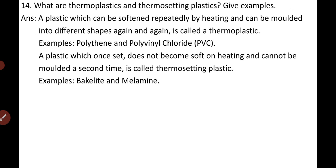Question twelve: What are thermoplastics and thermosetting plastics? Thermoplastics are plastics which can be softened repeatedly by heating and molded into different shapes again and again. They are flexible and can be bent easily without breaking. Examples: polythene and polyvinyl chloride (PVC). Thermosetting plastics are plastics which, once set, do not become soft on heating and cannot be molded a second time. Examples: bakelite and melamine.